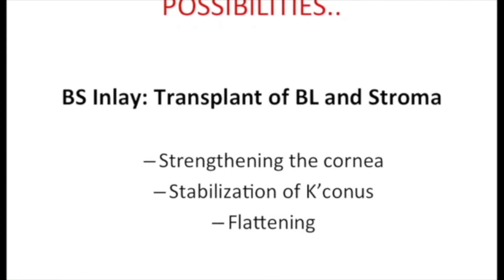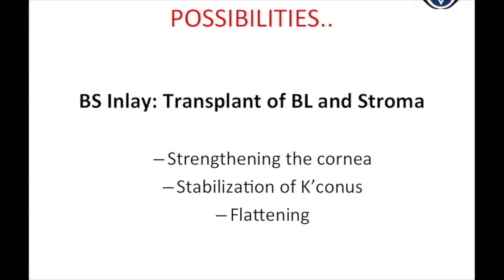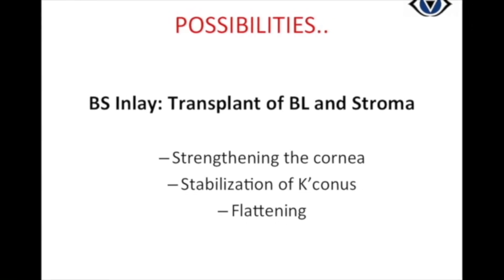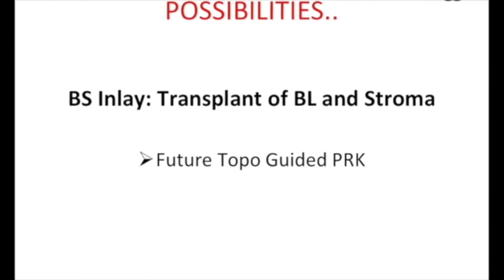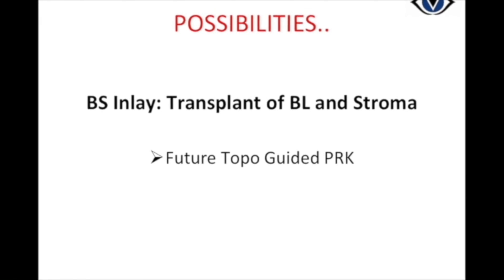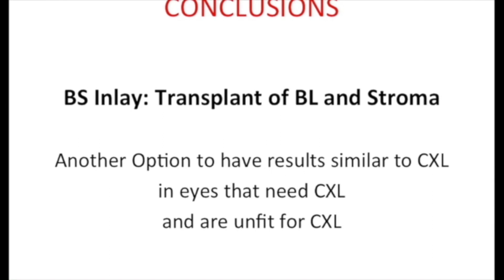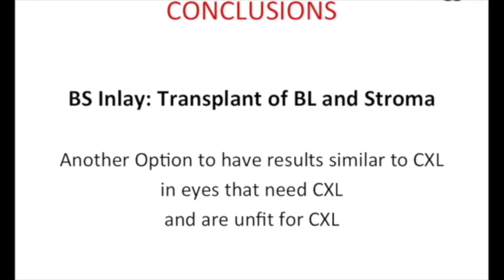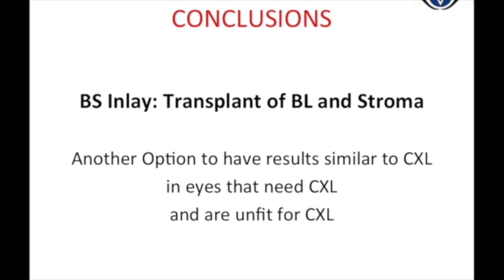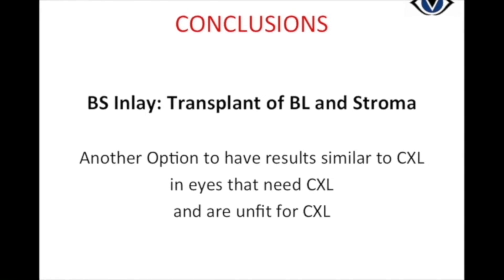The BS inlay may help in strengthening the biomechanics of the keratoconic cornea by transplanting Bowman layer and anterior stroma. Future possibility of topo-guided surface ablation to smoothen the topography may also be considered. Although long-term follow-up will tell us more, for the time being it is an easier technique for performing Bowman layer transplant that has already shown good results in stabilisation of keratoconus patients.